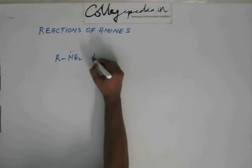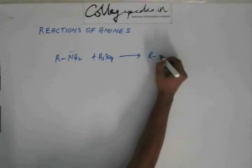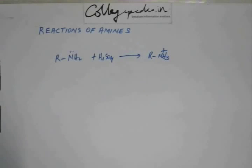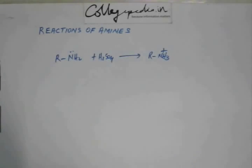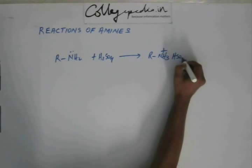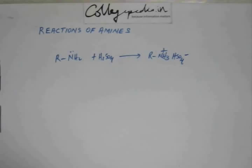So this amine can act as a base, and if we add an acid — suppose H₂SO₄ — then this nitrogen will gain an H⁺ and will convert into a substituted ammonium ion, and you will have a bisulfate ion. So in this case we will have a substituted ammonium sulfate salt.